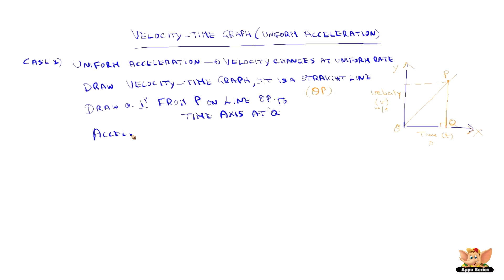Now to find out the acceleration from the graph is change in velocity by time. From the graph we see change in velocity is PQ by the time is OQ.